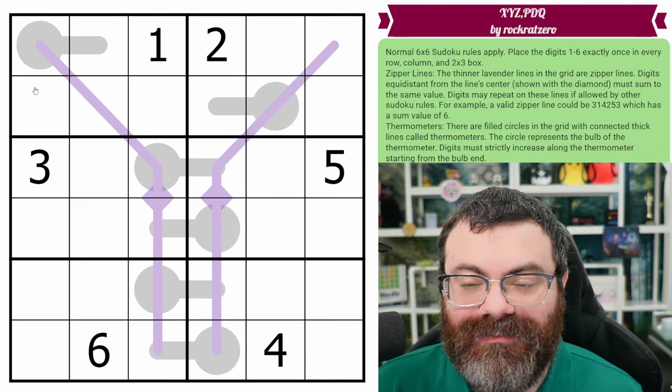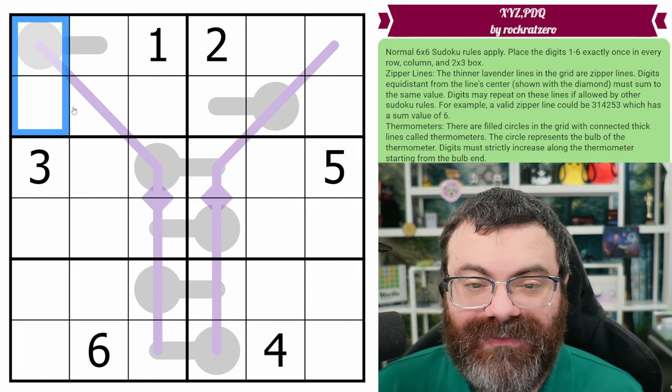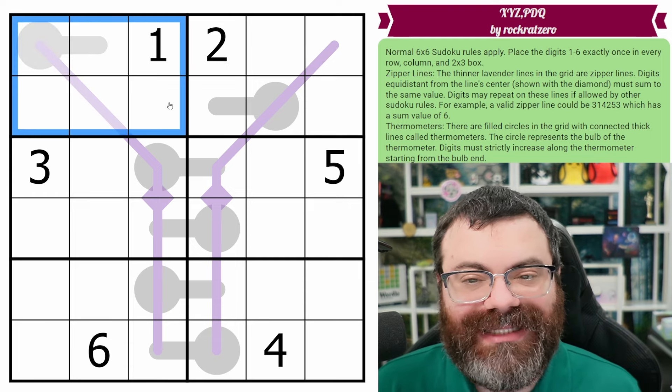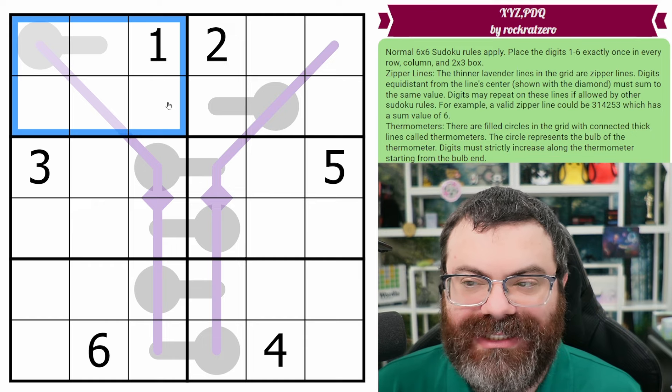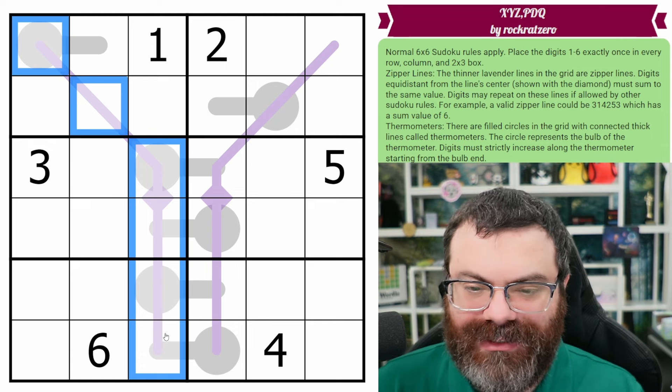In every word, we have normal six by six Sudoku rules. So in every row, every column, and every two by three box, we are placing the digits one to six exactly once each. We also have these lavender lines in the grid. Those are called zipper lines.